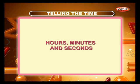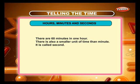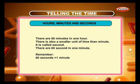Hours, minutes, and seconds. There are 60 minutes in 1 hour. There is also a smaller unit of time than the minute — it is called a second. There are 60 seconds in 1 minute. Remember: 60 seconds equals 1 minute, and 60 minutes equals 1 hour.